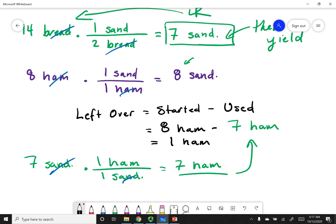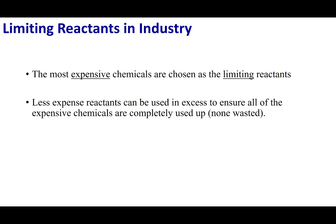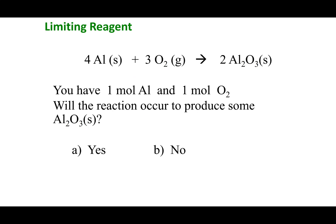A limiting reagent analysis is very important, especially in industrial processes. If you work for a chemical plant, the last thing they want to do is waste chemicals. If they have an unequal amount of chemicals going into a reaction, they want to make sure their limiting reagent is the most expensive chemical — they don't want to waste something valuable. That's why they run these calculations, and it also helps figure out how much product they will make. So let's go ahead and run through some limiting reagent problems.